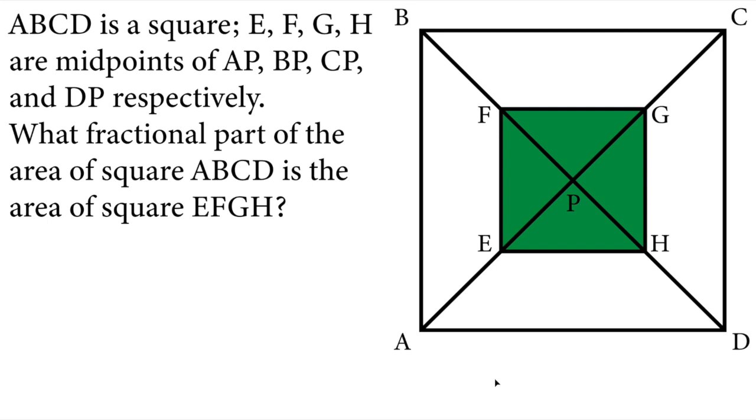Hi there, in this video we will solve this Math Olympiad question. Let's read the question. ABCD is a square. E, F, G, H are midpoints of AP, BP, CP, and DP line segments respectively. What fractional part of the area of square ABCD is the area of square EFGH?